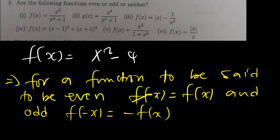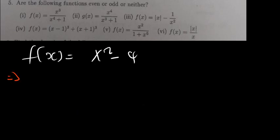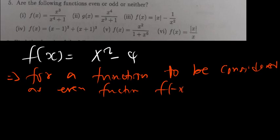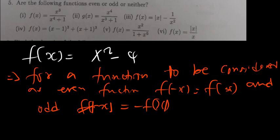This first statement is the first thing to write before solving any even and odd question. For a function to be considered even, f(-x) should equal f(x). For a function to be considered odd, f(-x) should equal negative f(x). From this information, you can now start solving. This statement should always come first.